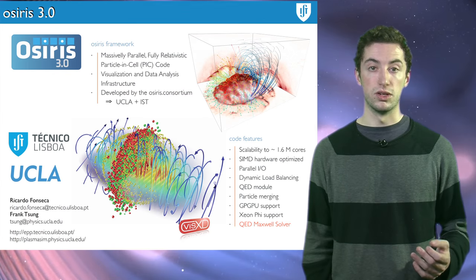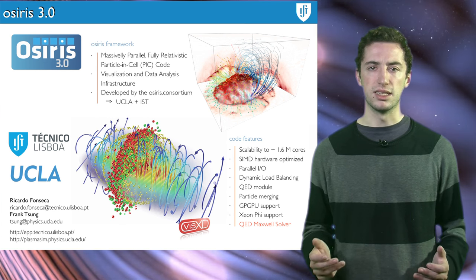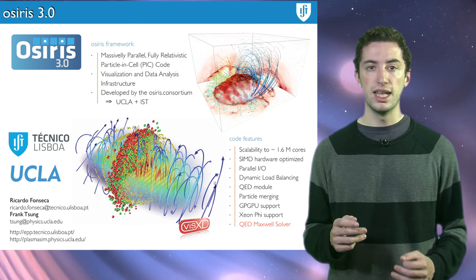This tool will then be inserted in a particle-in-cell code OSIRIS. A particle-in-cell code can simulate the evolution of plasma systems under extreme conditions by solving the Maxwell's equations for the fields and the equations of motion for the particles.